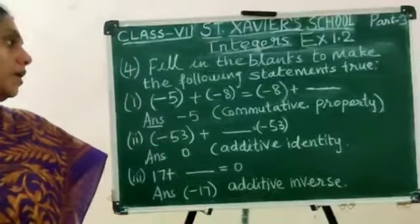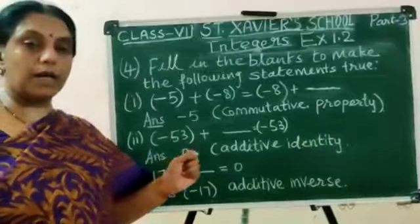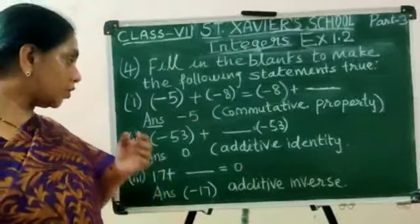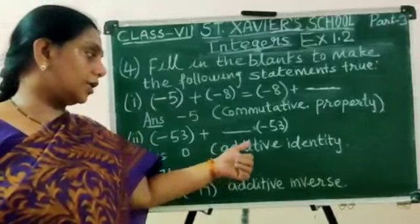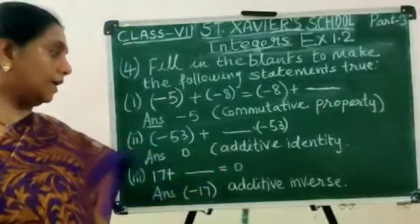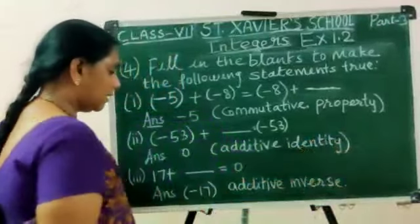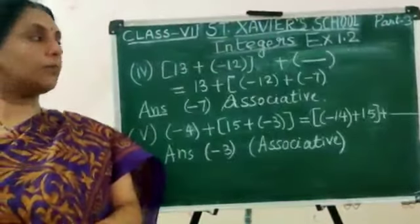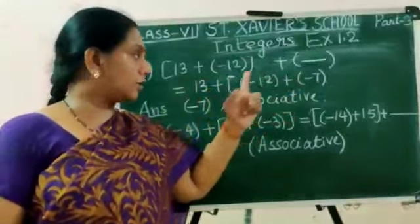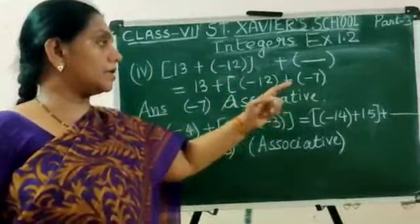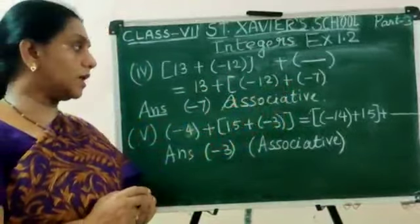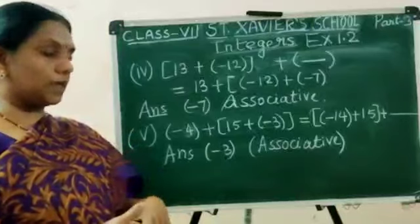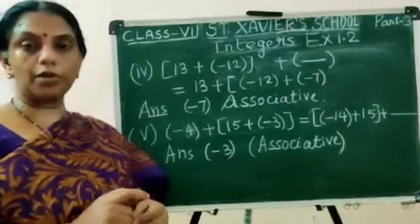Fill in the blanks: First, minus 5 plus (minus 8) equals minus 8 plus dash — answer is minus 5, using commutative property. Second, minus 53 plus dash equals minus 53 — answer is 0, using additive identity. Third, 17 plus dash equals 0 — answer is minus 17, that is additive inverse. Fourth, 13 + (−12) + dash = 13 + (−12) + (−7) — answer is minus 7, associative property. Fifth, minus 4 plus 15 plus (minus 3) equals minus 14 plus 15 plus dash — answer is minus 3, associative property.